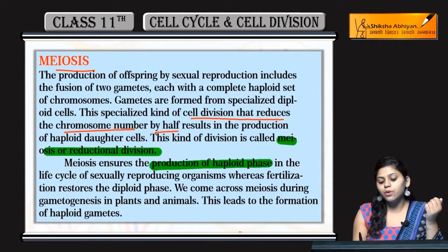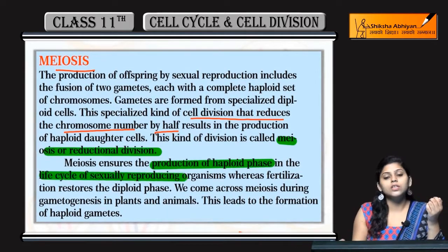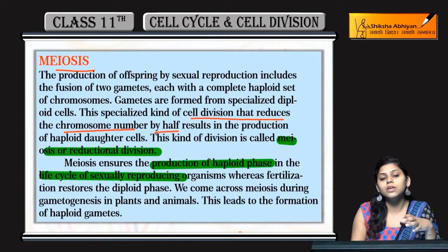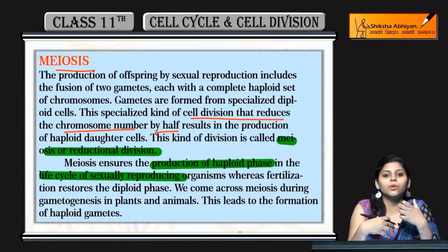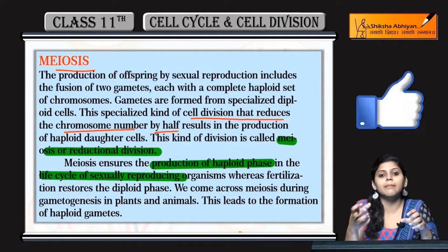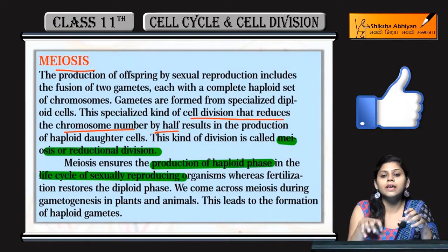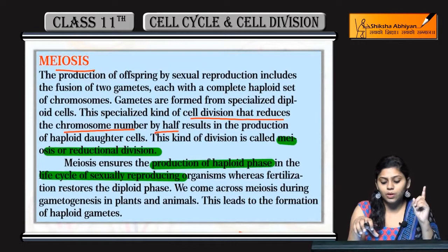Meiosis ensures the production of the haploid phase in the life cycle of sexually reproducing organisms. पूरा organism जैसे हम human beings diploid होते हैं. लेकिन जब gamete formation होनी होती है, तो वो gametes की वजह से fusion करके zygote बनेगा. तो वो gamete formation होती है because of meiosis.